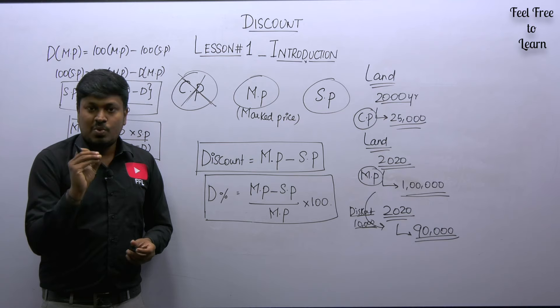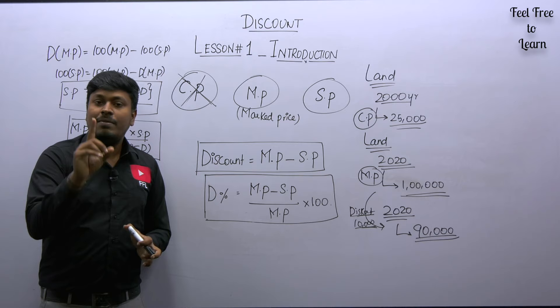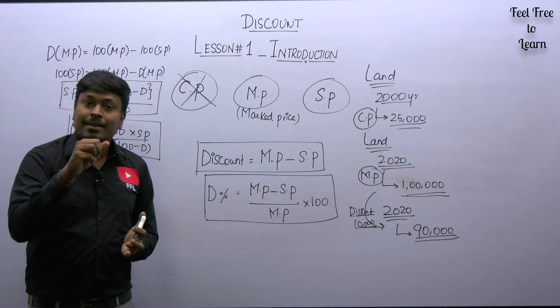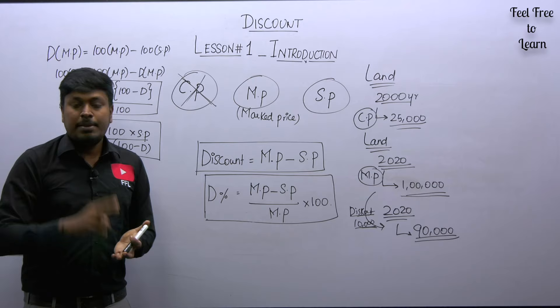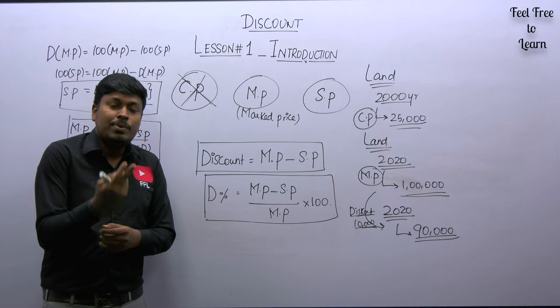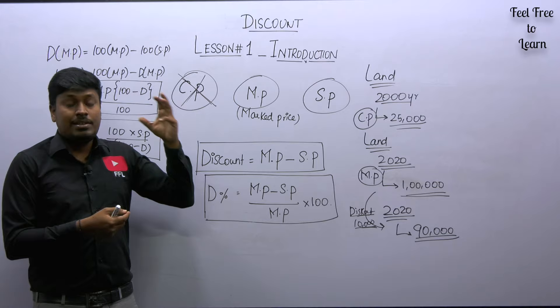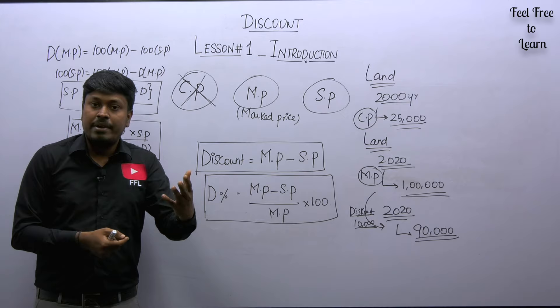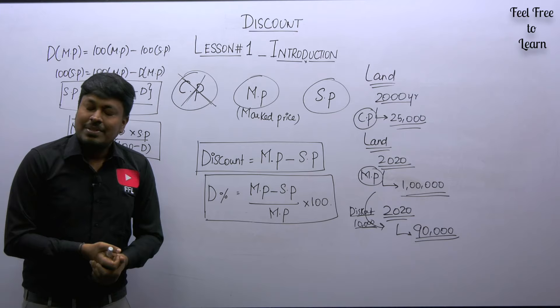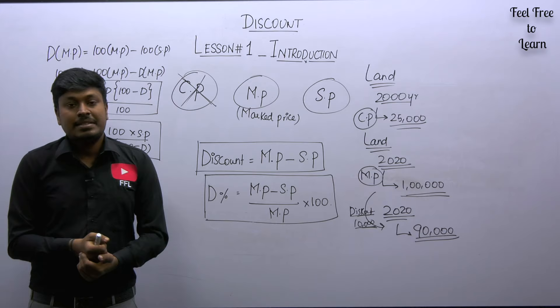To summarize this introduction: first, discount is always calculated on the marked price — never care about the cost price. Second, know the difference between cost price, selling price, and marked price. Third, the key formula is: Discount % = (MP − SP) ÷ MP × 100. Two more derived formulas exist but are not required to memorize. Thank you for watching — don't forget to watch lesson number two and lesson number three on this topic.